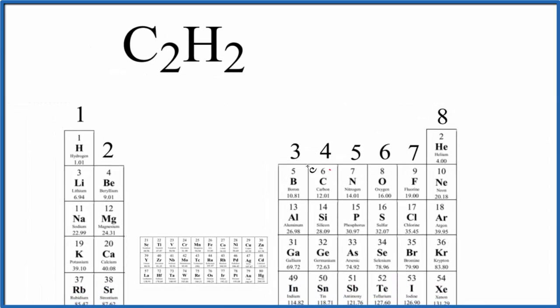So we find carbon right here, group 14, sometimes called 4A, that has four valence electrons. We have the two carbon atoms, and then hydrogen right here, group 1. All of these elements here have one valence electron. We have two hydrogen atoms. So we have 8 plus 2. That gives us a total of 10 valence electrons for the C2H2 Lewis structure.